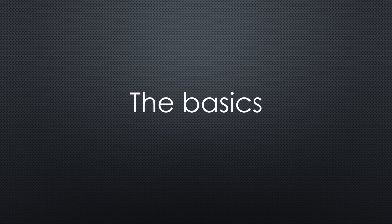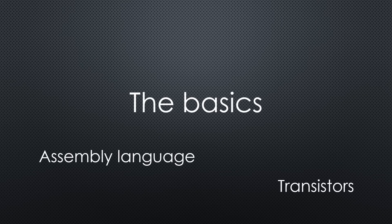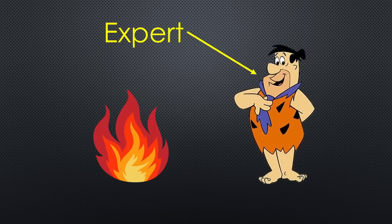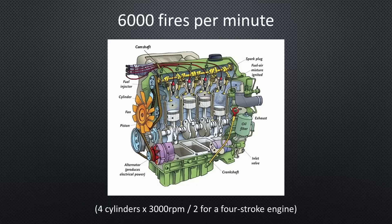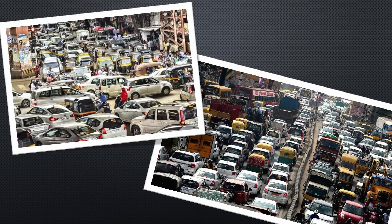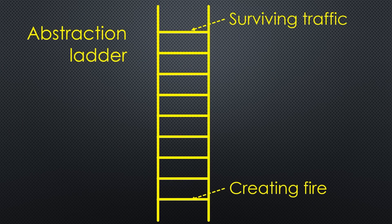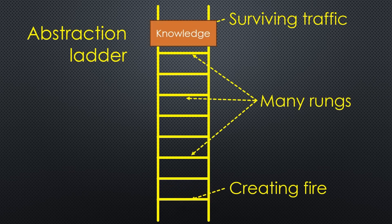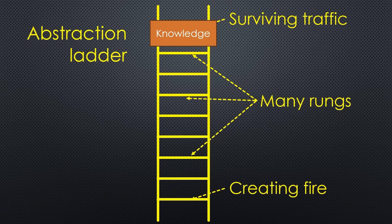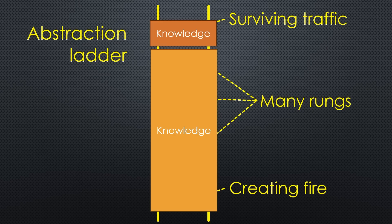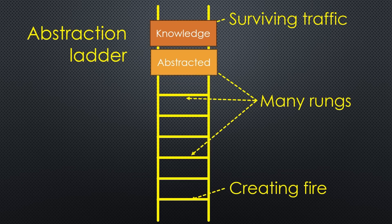Old people often complain that young people should learn the basics to be good. For example, they should understand transistors or assembly language to be a good engineer or programmer. But is this true? In the Stone Age, you were an expert if you were capable of creating a fire, because it was valuable and not easy. Today, everybody driving an internal combustion engine creates 6,000 fires every minute, without thinking and without any know-how. Today, an expert is maybe someone who can drive through a crowded city without an accident. If we connect these two events with a ladder, it must have many rungs. Stone Age experts knew things, and today's experts know things, but much higher on the ladder. Still, they need all the developments included in the different rungs of the ladder, but because they are abstracted into their tools and knowledge, they do not have to care.